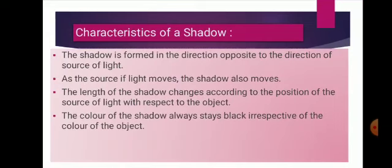The characteristics of shadows are: the shadow is formed in the direction opposite to the source of light; as the source of light moves, the shadow also moves; the length of the shadow changes according to the position of the source of light with respect to the object; and the color of the shadow always stays black, irrespective of the color of the object. Even if you shine red-colored light, the shadow will still be black.